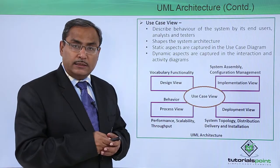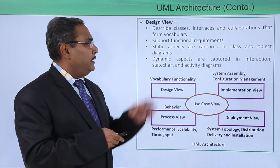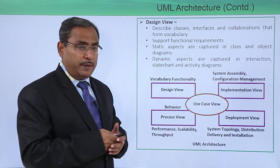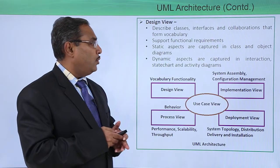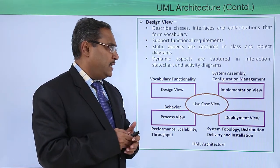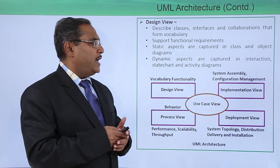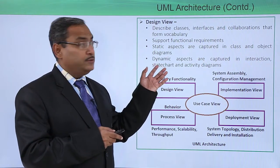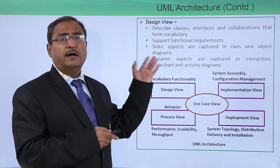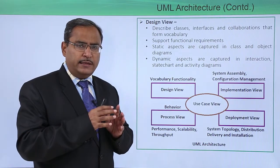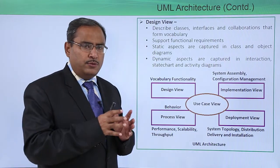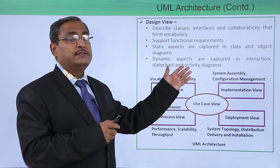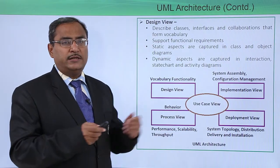Now we go for the Design View. It describes classes, interfaces, and collaborations that form the vocabulary, and supports functional requirements. Static aspects are captured in class and object diagrams, and dynamic aspects are captured in interaction, structure, and activity diagrams. In this design view, we describe the system using classes, interfaces, and collaborations. It depicts the static view of the system, and the dynamic view is obtained through sequence diagrams, collaboration diagrams, activity diagrams, and structure diagrams.